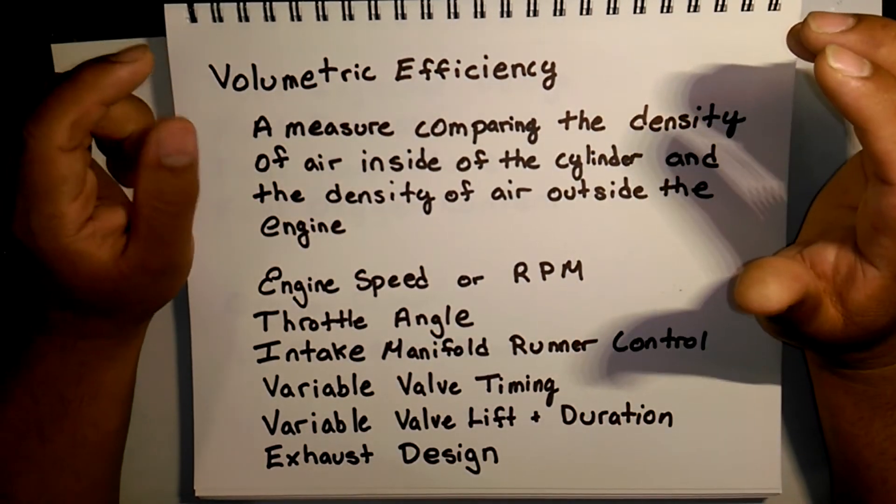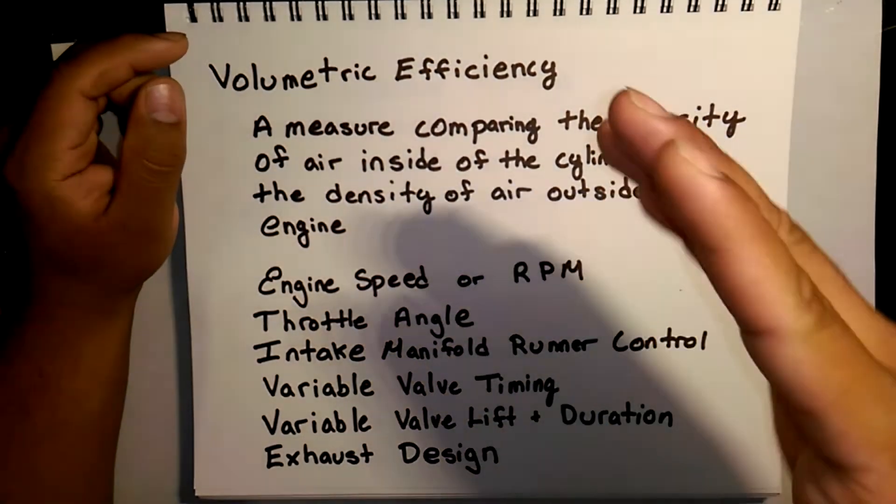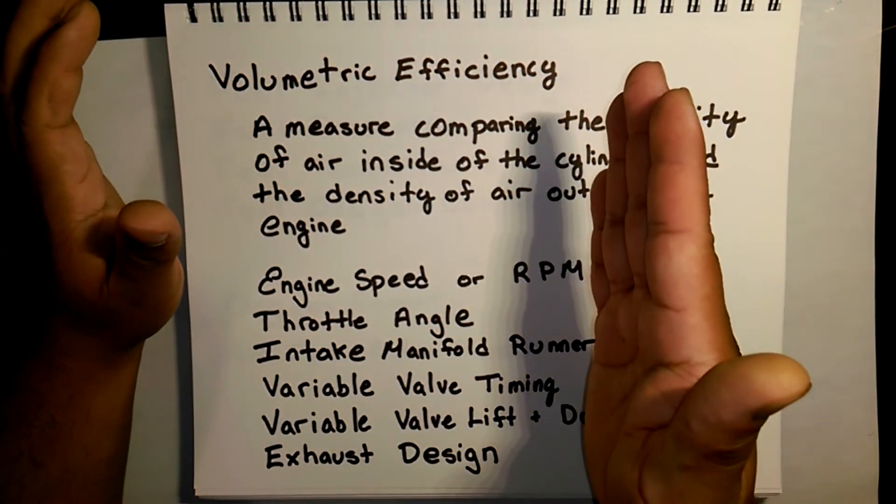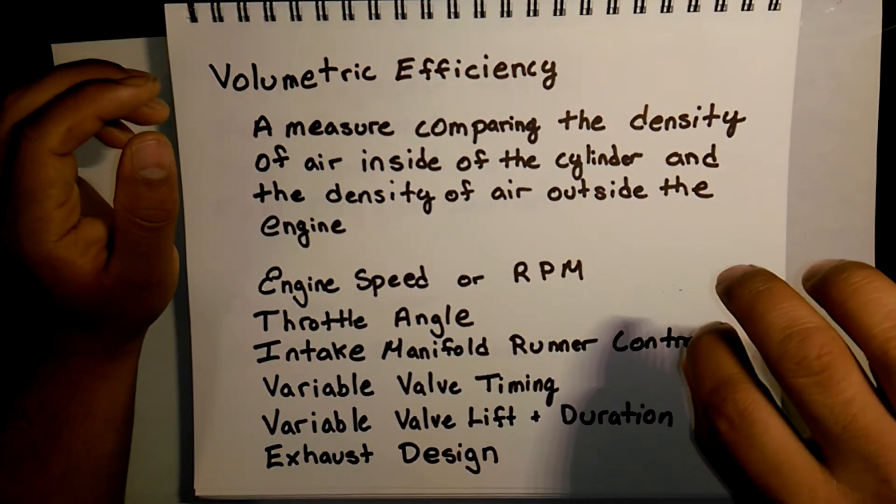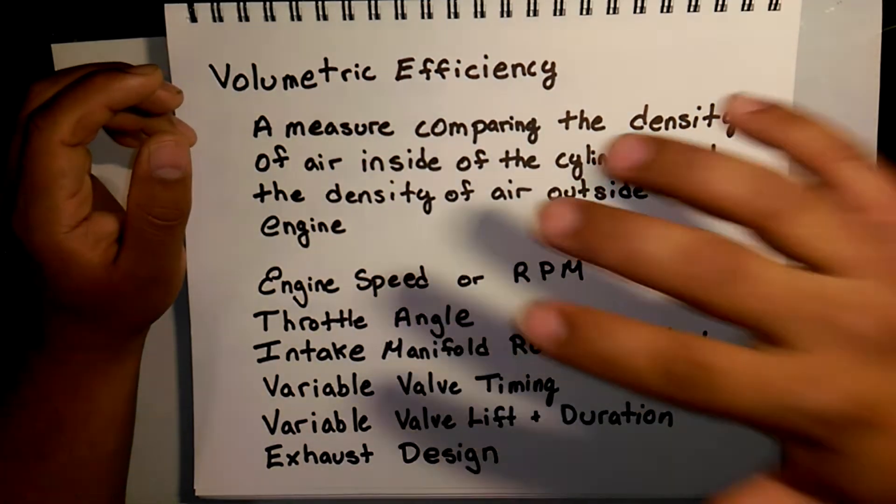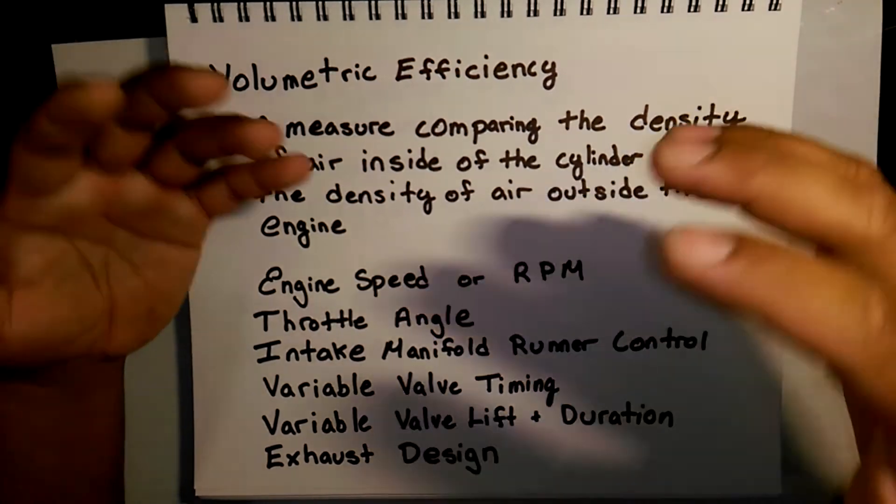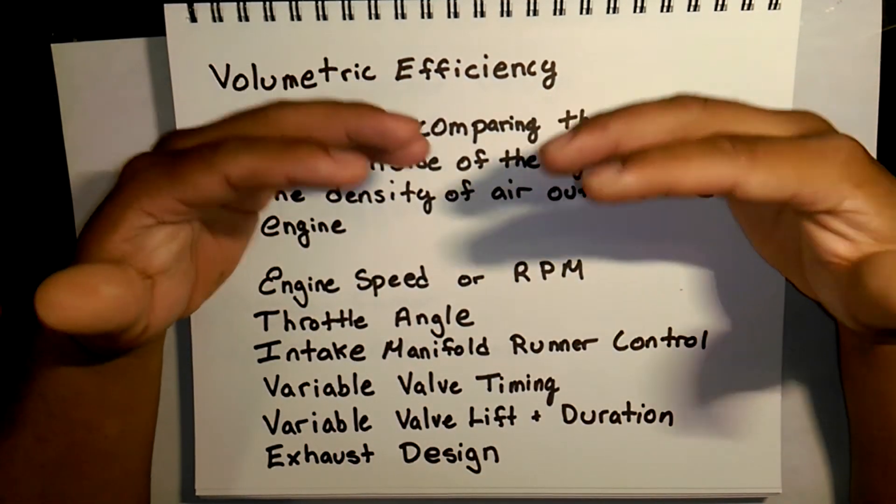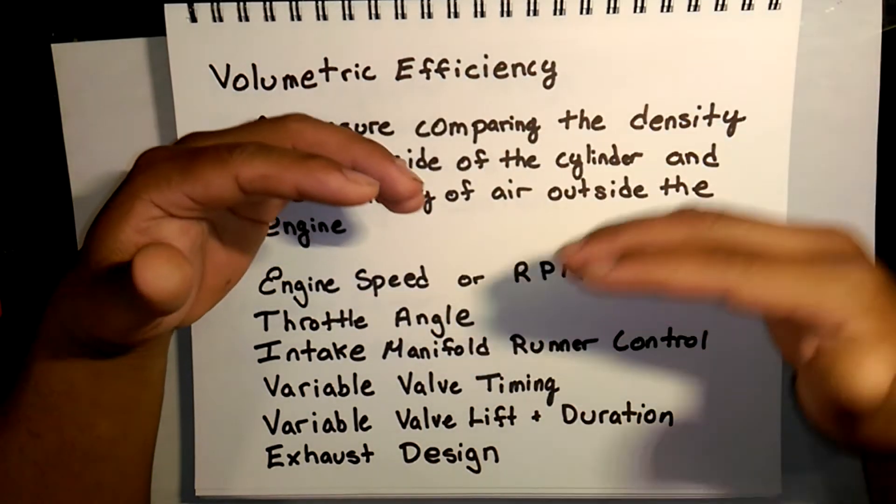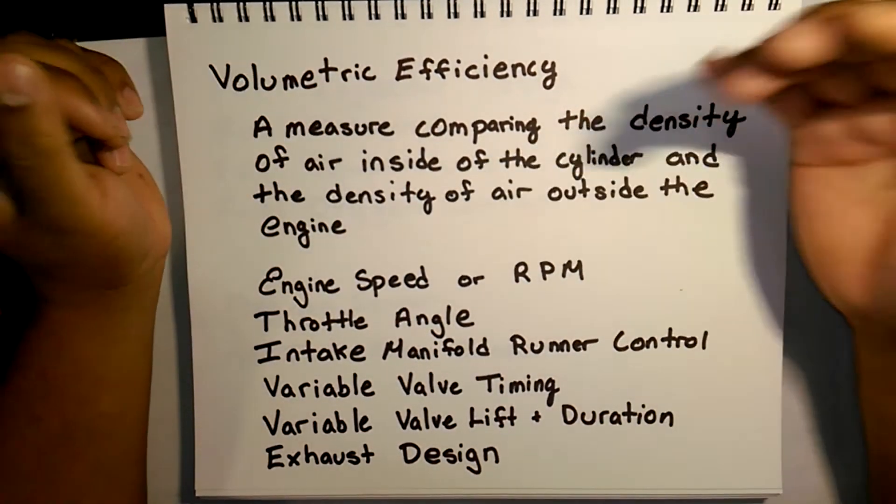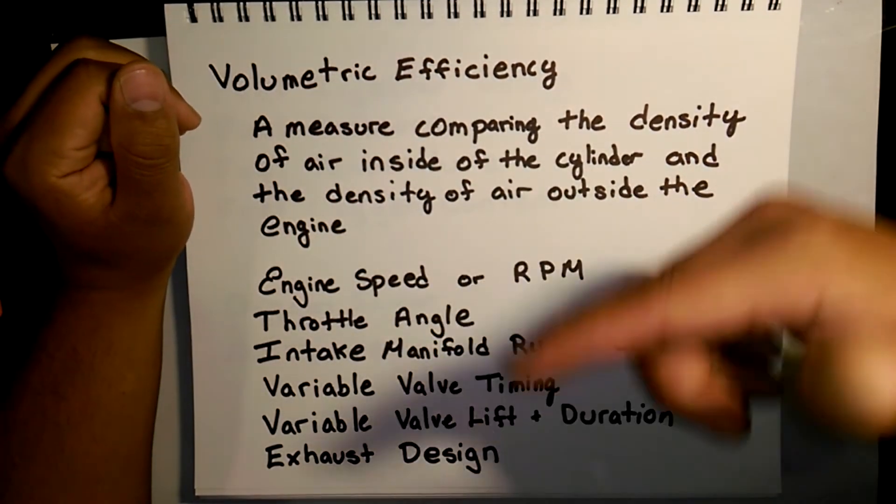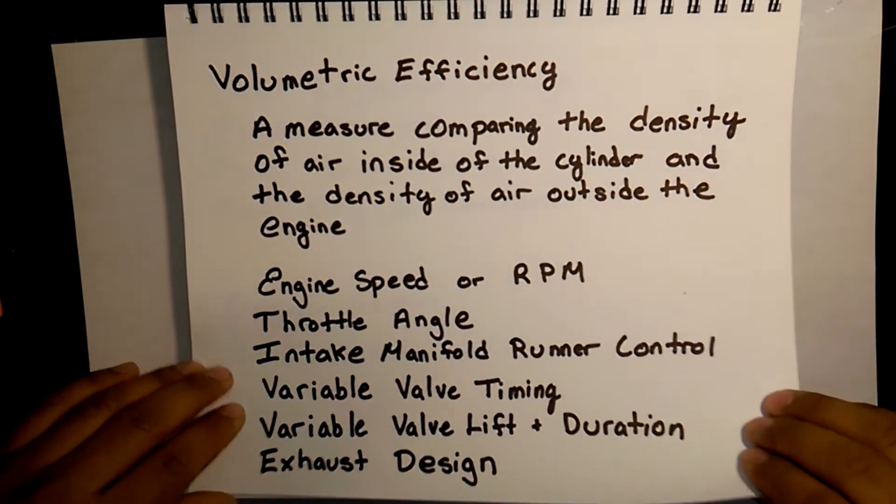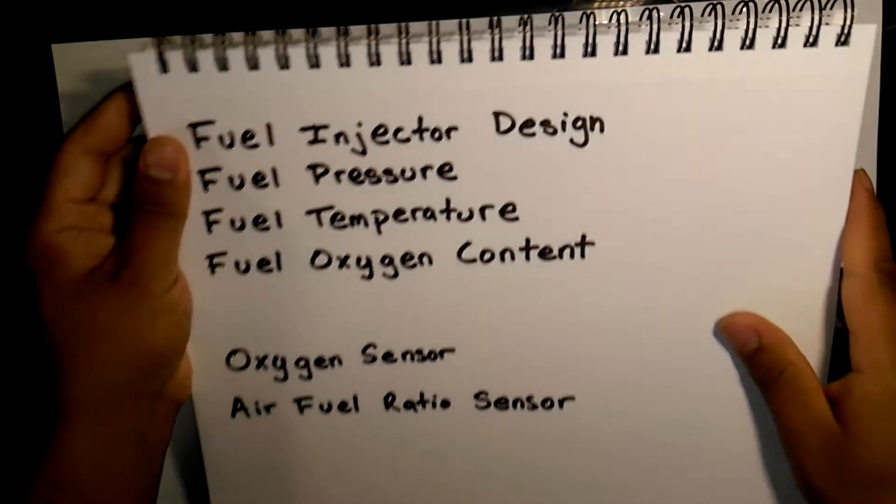The biggest thing that affects volumetric efficiency is throttle angle. If the throttle is completely closed or partially closed, the air cannot get through easily. So the amount of air inside of the engine cylinder will be much less than the amount of air out in the atmosphere. But that is on purpose. This isn't really a measure of efficiency, but more you want to control how much power the engine is outputting. If you're just putting around in traffic, you don't want the engine screaming at maximum horsepower. It's not as important as the other components, but it is something that the engine computer does take into account.